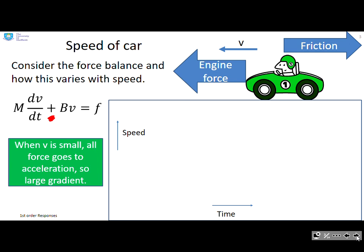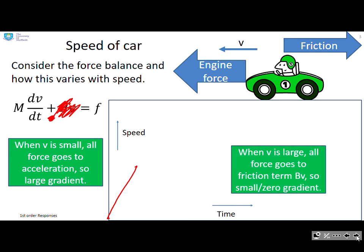So when v is small, essentially this term is going to be zero. So all the force is going to go to the acceleration term, so that means I'm going to get a steep gradient. So that gradient you can see is dv/dt. However, when v is large, so if v is very large, then essentially this term is going to absorb all of the force. So dv/dt is going to be small or zero. So we end up with pretty much a zero gradient.